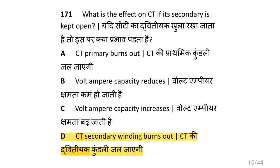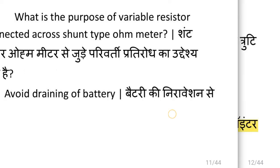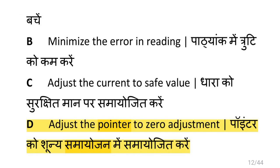What is the effect on CT if its secondary winding is kept open? Then the CT secondary winding burns out due to enormous heat. What is the purpose of the variable resistor connected across the shunt type ohmmeter? That is to adjust the pointer to zero adjustment.